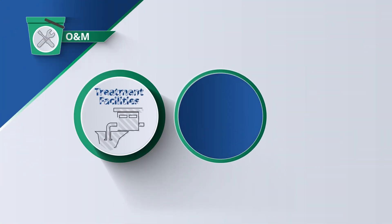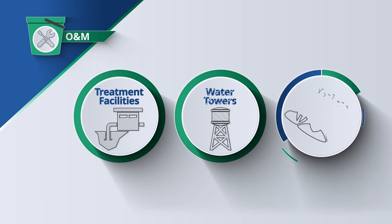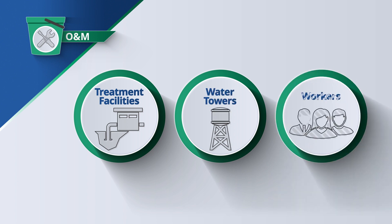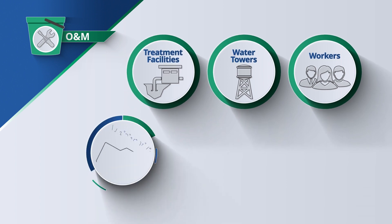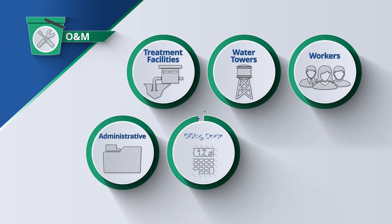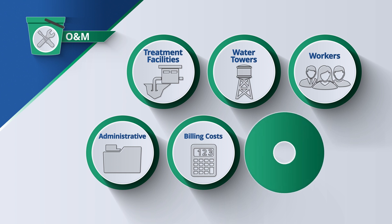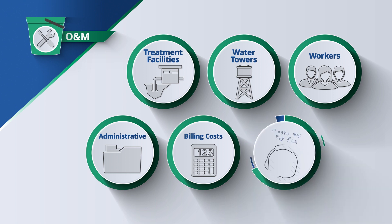O&M includes most of the obvious costs of providing water. You can see the treatment facilities, water towers and workers around the community. O&M also includes administrative and billing costs, which are also typically front-facing aspects of a system. Having a dedicated staff to handle customer service and manage the system, regardless of size, is understood to be necessary and directly impacts customer fees.